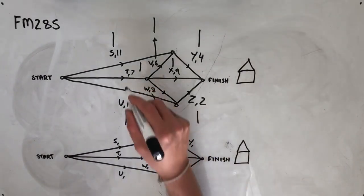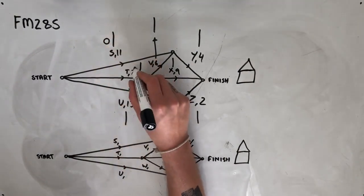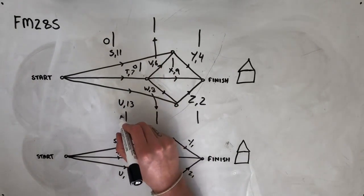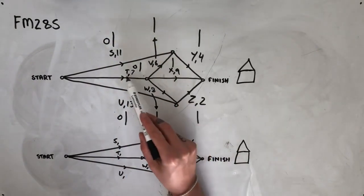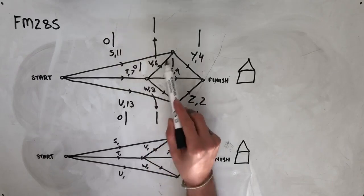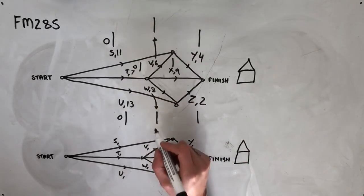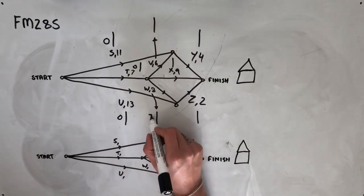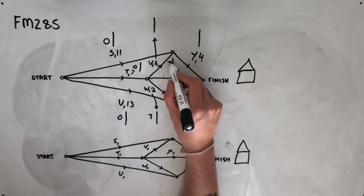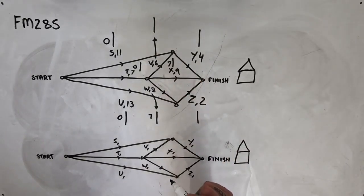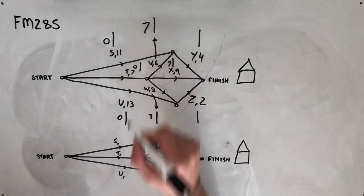Moving through this from the start, we've got these three activities S, T, and U are all going to have earliest starting times of zero. From here, it's probably best that we look at the activities that come out of T, given that they will connect up with the ones coming out of S and U in a moment. So W is going to have an earliest starting time of seven, given that activity T will take seven days to complete. X will also have an earliest starting time of seven. V will have an earliest starting time of seven also.